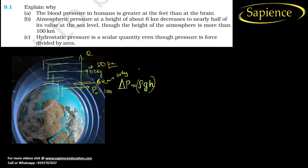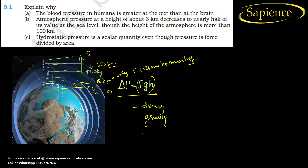The reason is that change in pressure depends not just on height but also on density. The formula is: delta P depends on density, gravity, and height. As we go upward, the density of the atmosphere changes drastically, so pressure is not directly proportional to height alone.